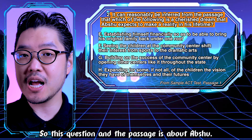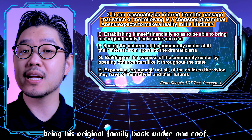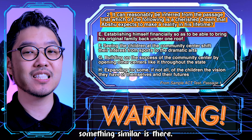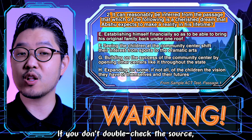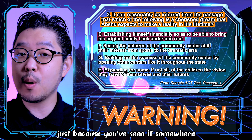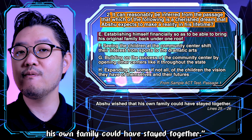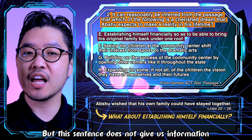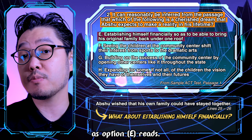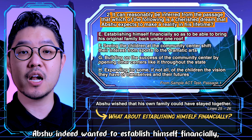This question and the passage is about Apshu. Option E reads: 'establishing himself financially so as to be able to bring his original family back under one roof.' Now, somewhere in the second paragraph, something similar appears. If you don't double-check the source, you will fall into the temptation of choosing this choice just because you've seen it somewhere in the second paragraph. Lines 25 to 26 read: 'Apshu wishes that his own family could have stayed together.' But this sentence does not give us information about the main character wanting to establish himself financially, as option E reads.